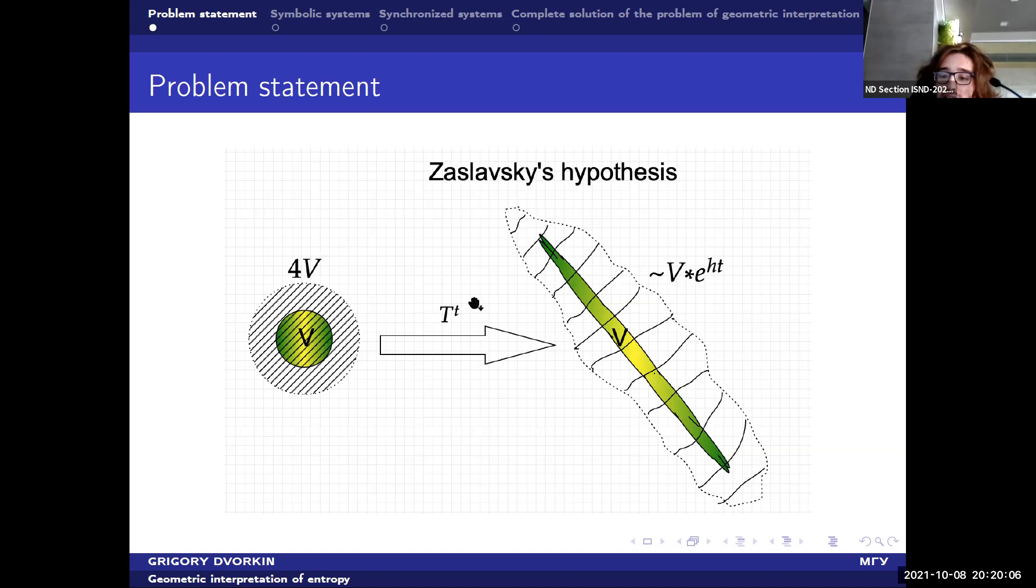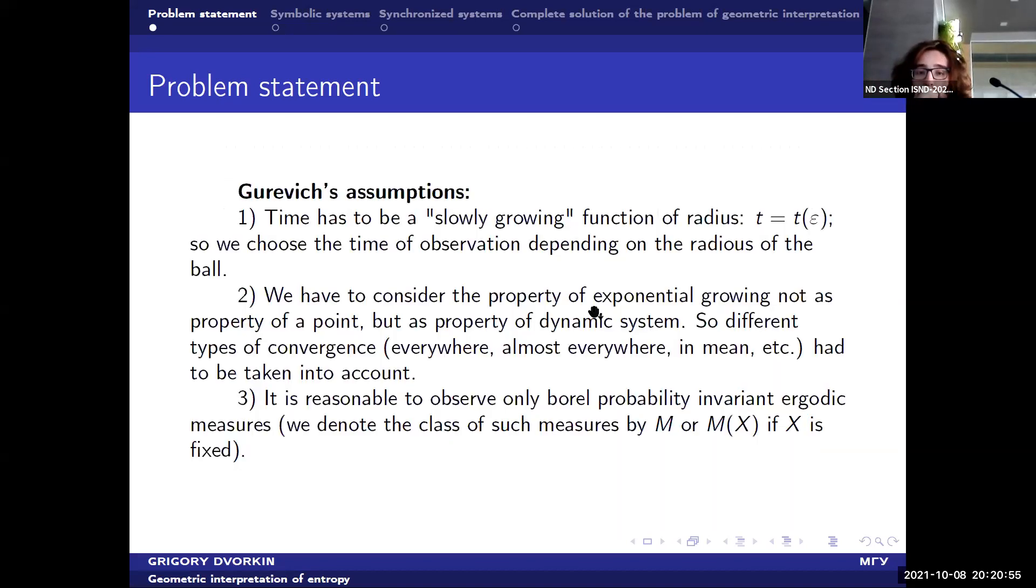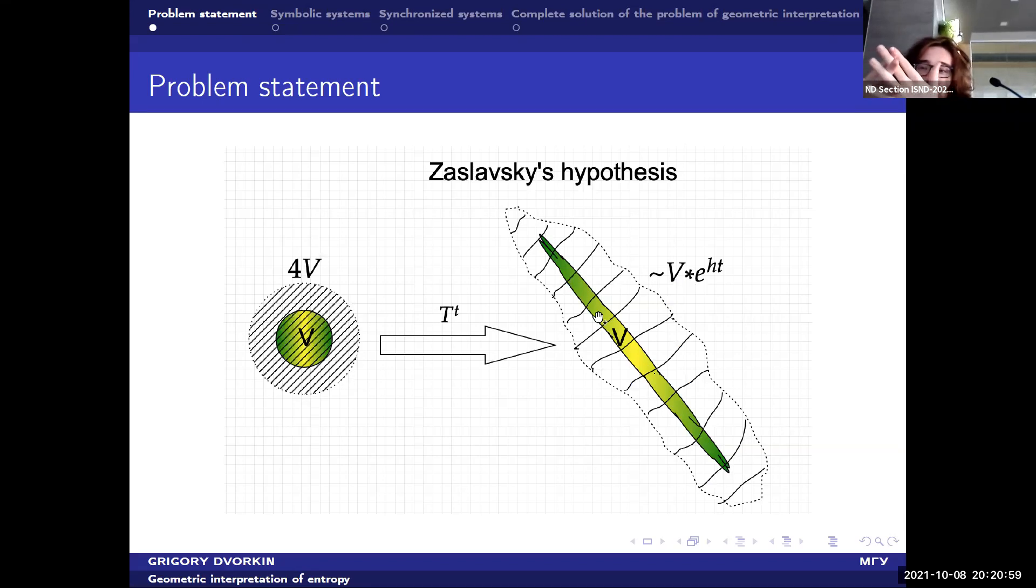And Zaslavsky, he suggests, he implied that the volume of this boundary, this big thing, is growing exponentially. And moreover, the exponent Ht, where H is Kolmogorov-Sinai entropy, or metric entropy. That is the famous invariant of ergodic theory, and of all the theory of dynamic systems.